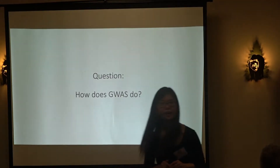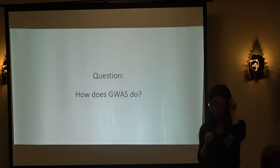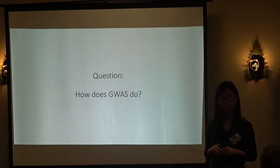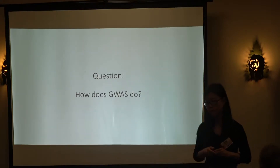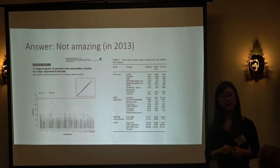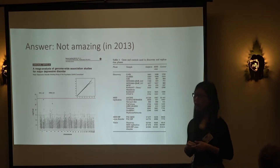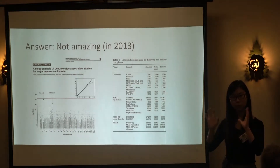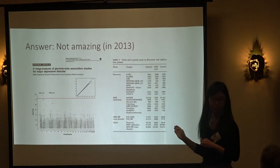Given all of this, depression is a tricky phenotype to deal with. In 2007, the Wellcome Trust Case Control Consortium churned out the first GWAS for complex diseases like diabetes with a few thousand cases and controls and found quite a lot of associations. But in 2013, the Psychiatric Genomics Consortium meta-analyzed ten cohorts carefully diagnosed with DSM criteria — 9,000 cases and 9,000 controls — and did not find anything, despite depression having heritability similar to other complex traits studied by WTCCC.